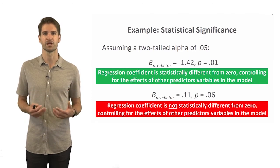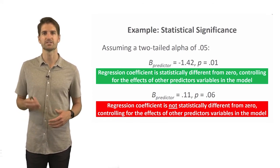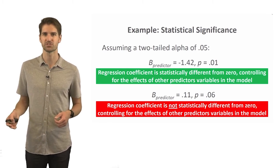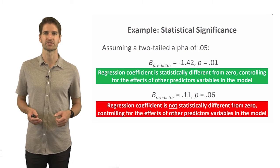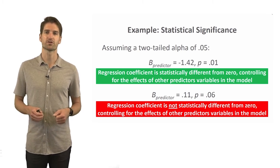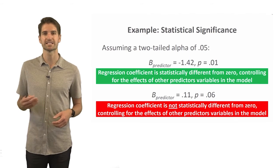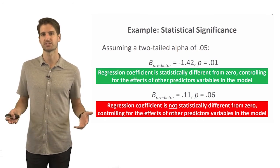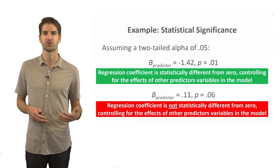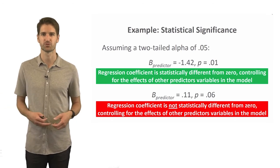In the second example, a regression coefficient B equals .11 with an associated p-value of .06. That p-value is greater than .05, so we fail to reject the null hypothesis that the coefficient is zero. We conclude that this predictor variable's regression coefficient of .11 is not statistically significantly different from zero — we treat it as non-existent, meaning there's no relationship between that predictor and the outcome variable when controlling for the other predictors in the model.